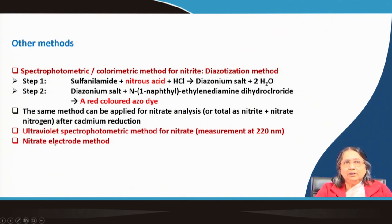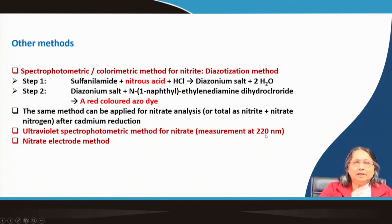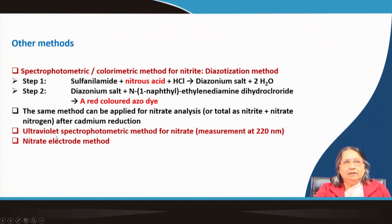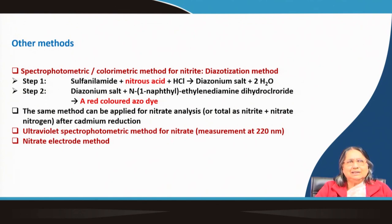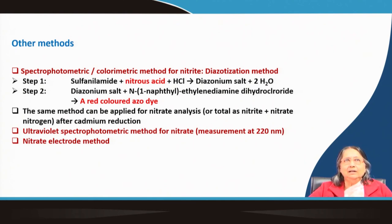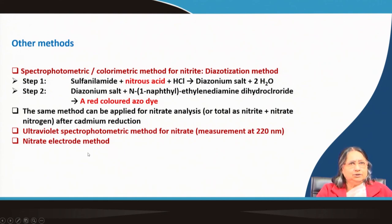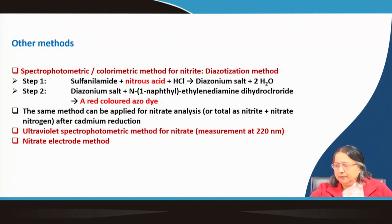Another method is UV spectrophotometry at 220 nanometers, a simple but less reliable method requiring a UV-visible spectrophotometer, which is costlier than a visible-only instrument. A nitrate electrode is also available — very user-friendly, requiring only calibration and measurement, though its shelf life is only about one to two years and it is relatively costly.